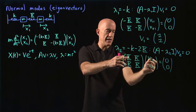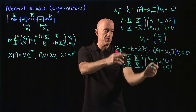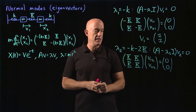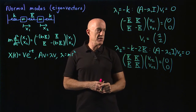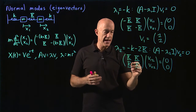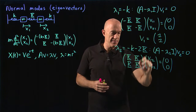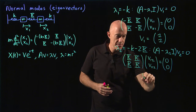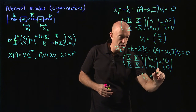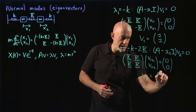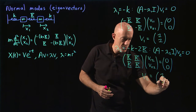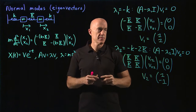From that matrix equation, v two-two has to be the opposite sign of v one-two. So we get the second eigenvector v two equal to [1, -1].